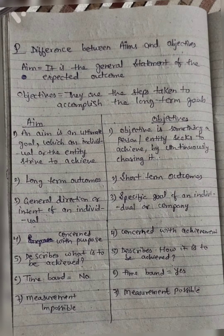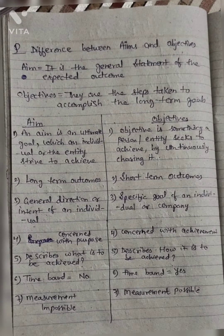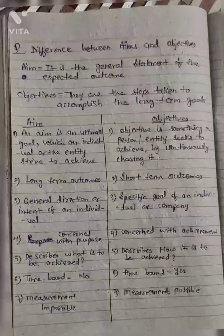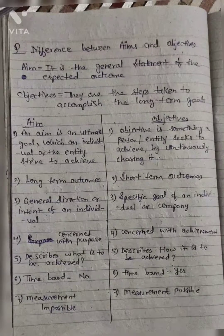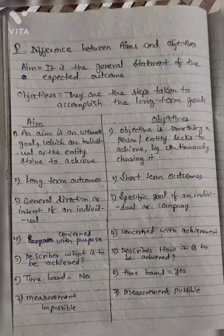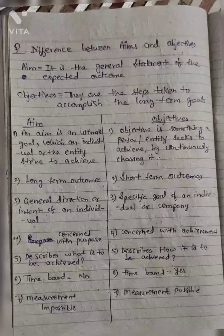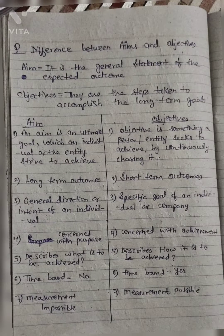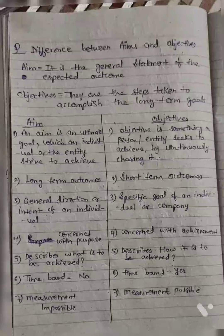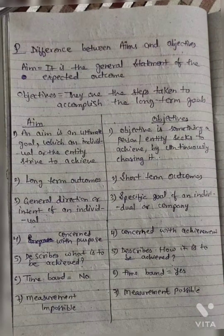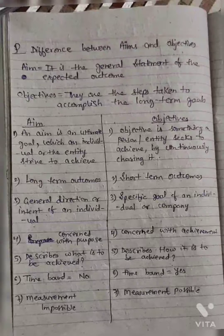Now we have to differentiate aim and objectives. An aim is an ultimate goal which an individual or entity strives to achieve. An objective is something a person or entity seeks to achieve by continuously chasing it. Aim is the long-term outcome and objectives are short-term outcomes.